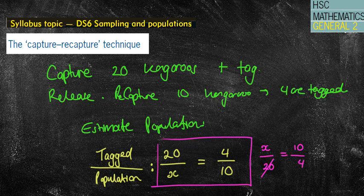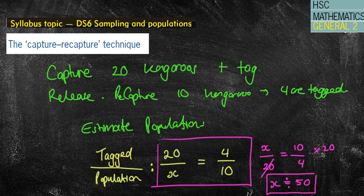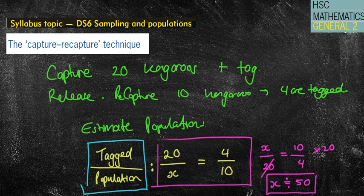And then I'm simply going to times it by 20 to solve my question. X equals 10 times 20 is 200. And then I'm going to do 200 divided by 4, which is going to be 50. And so I get approximately equal to 50 kangaroos that are in my population. So again, the main thing to think about is we're going to create an equation with the tagged over the whole population.